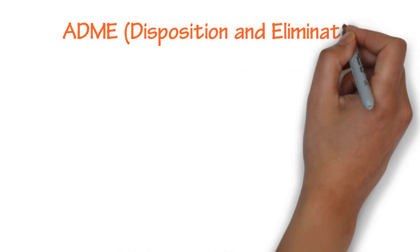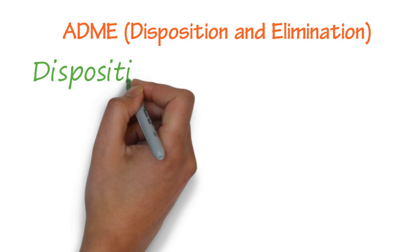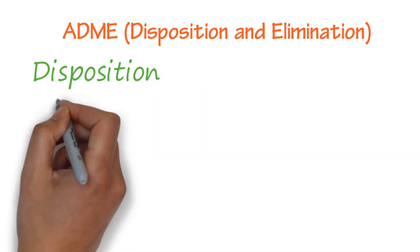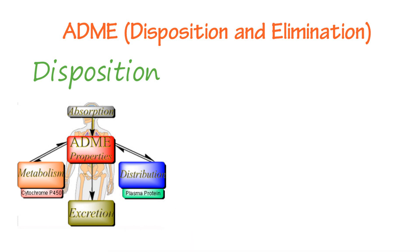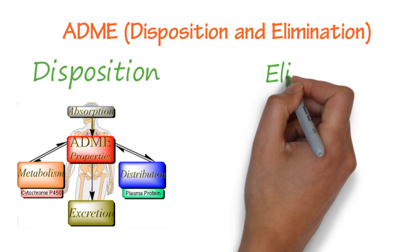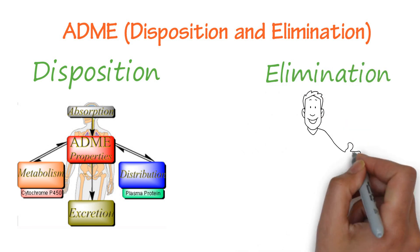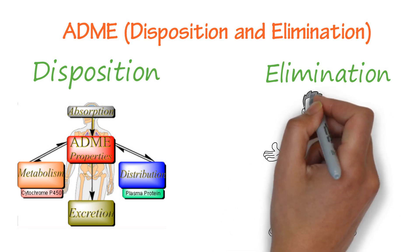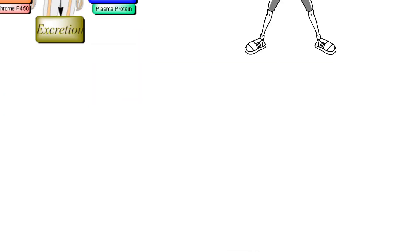ADME: disposition and elimination. Once any substance enters the body, it goes through a management process to determine what can be used for different functions and what can be excreted. Elimination is the process of metabolism and excretion, how the body breaks down and uses what's entered the body. The body eliminates anything it doesn't need.